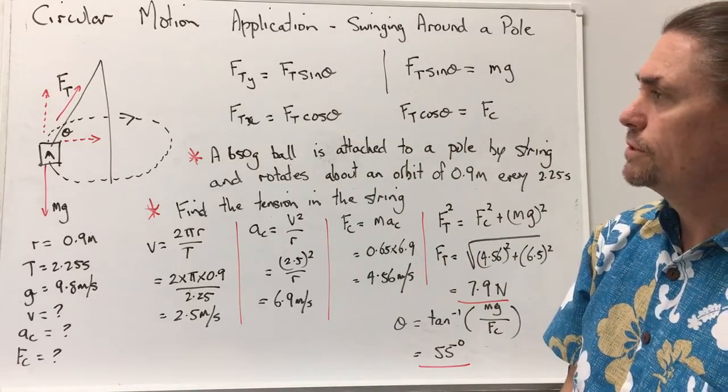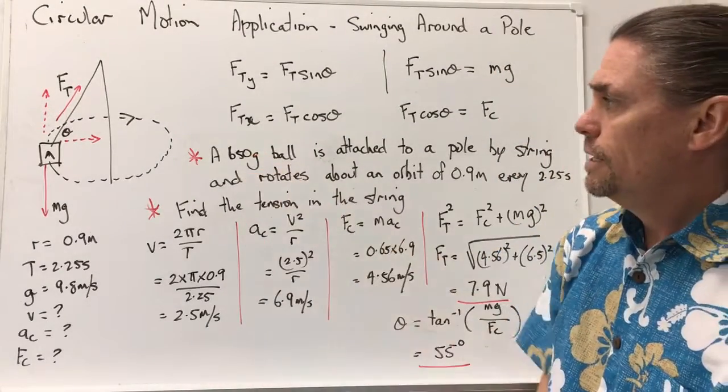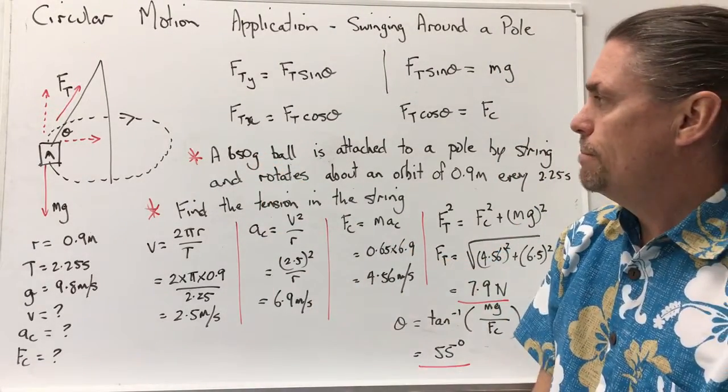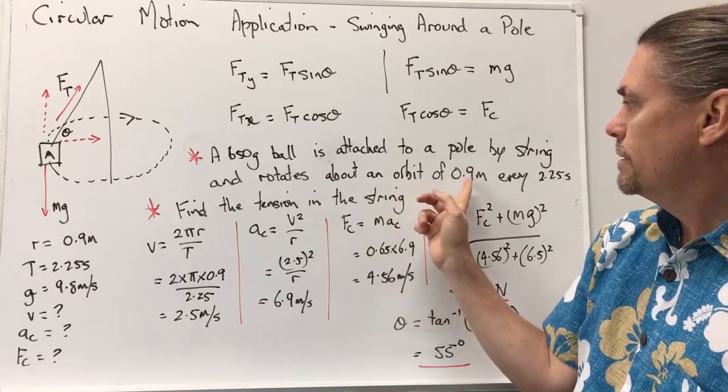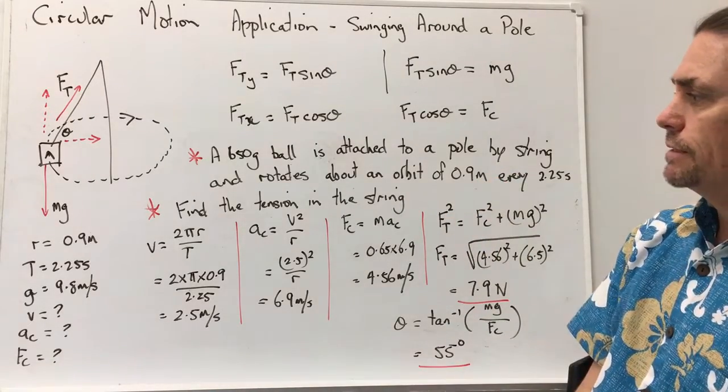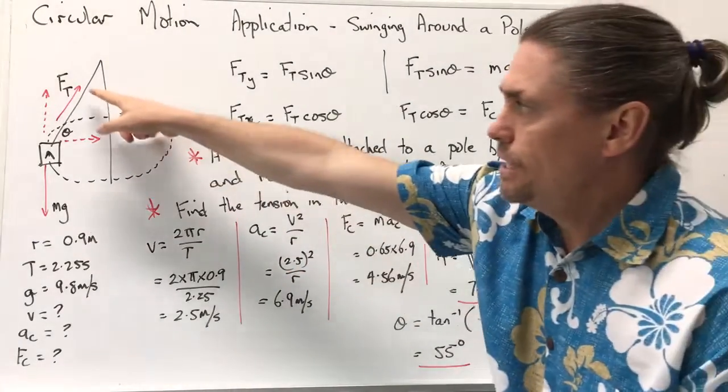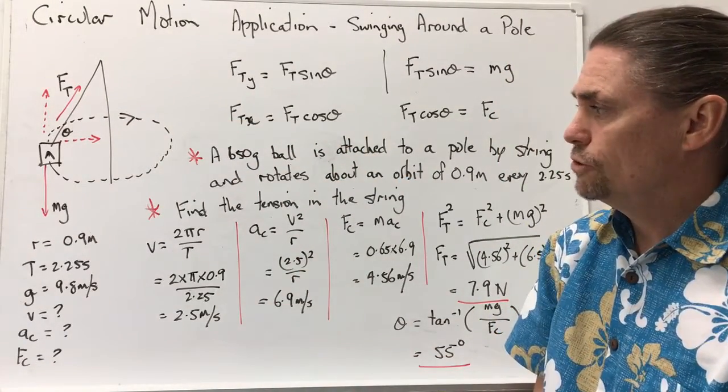So how might we use this? Well, let's have a look. Let's say we have a 650 gram ball, and it's attached to a pole by a string. It rotates about an orbit that's 0.9 metres every 2.25 seconds, and we want to find out the tension in the string.